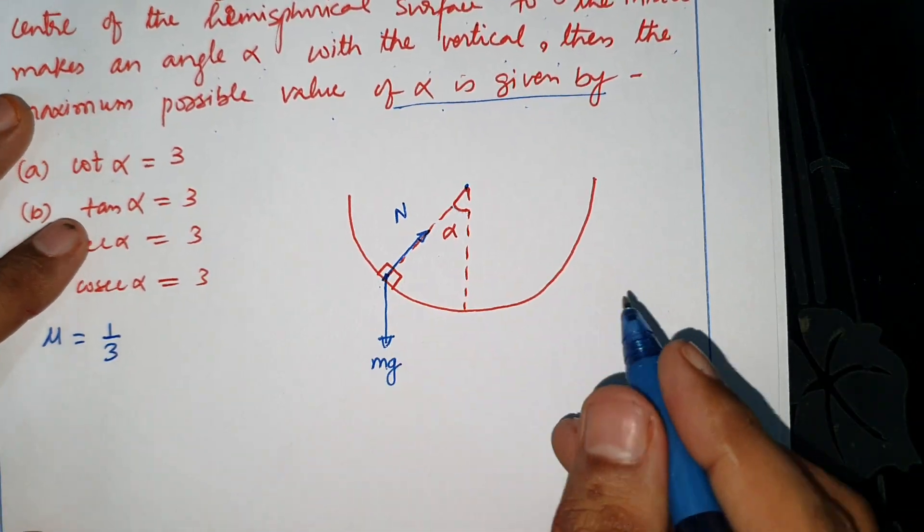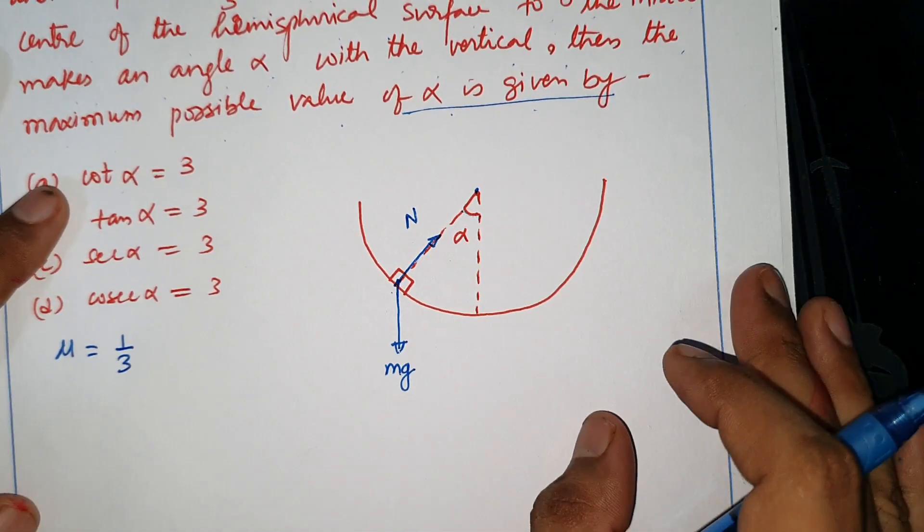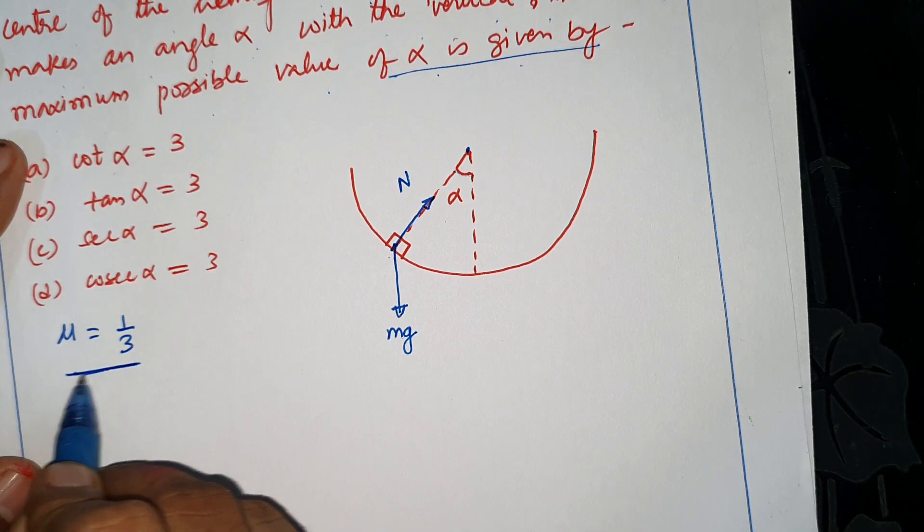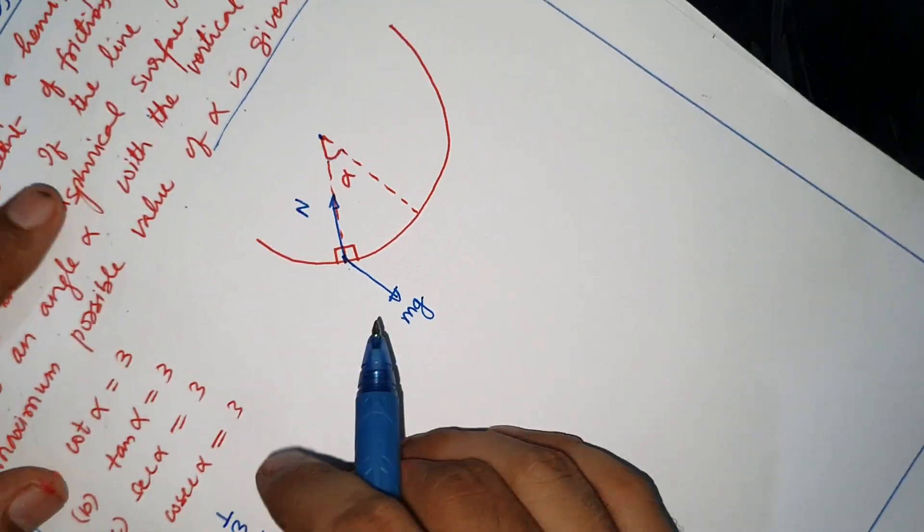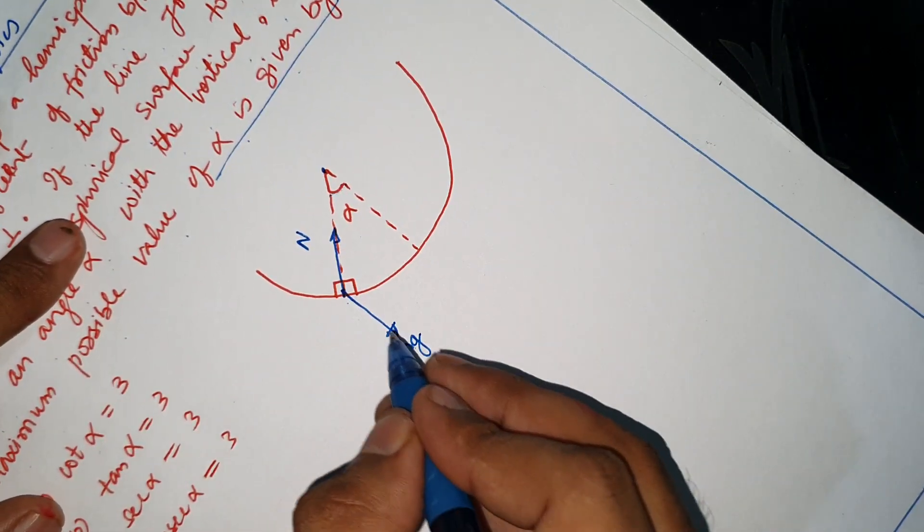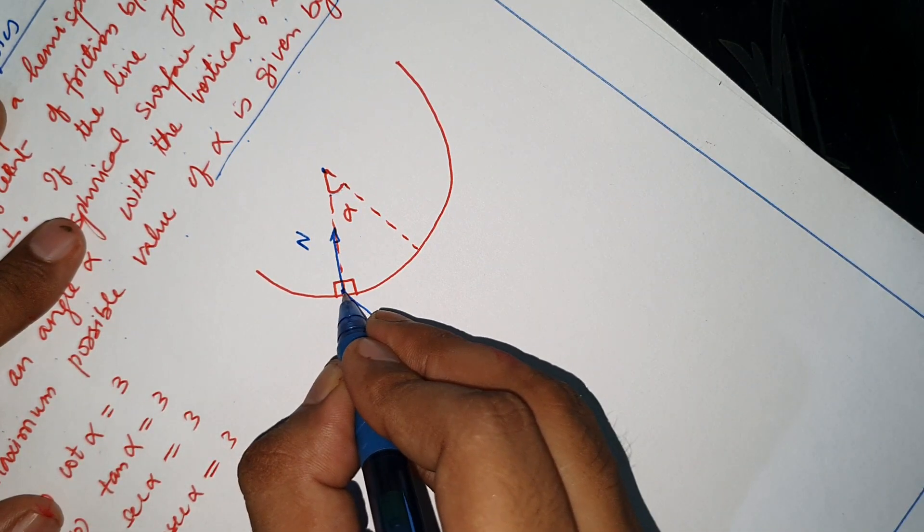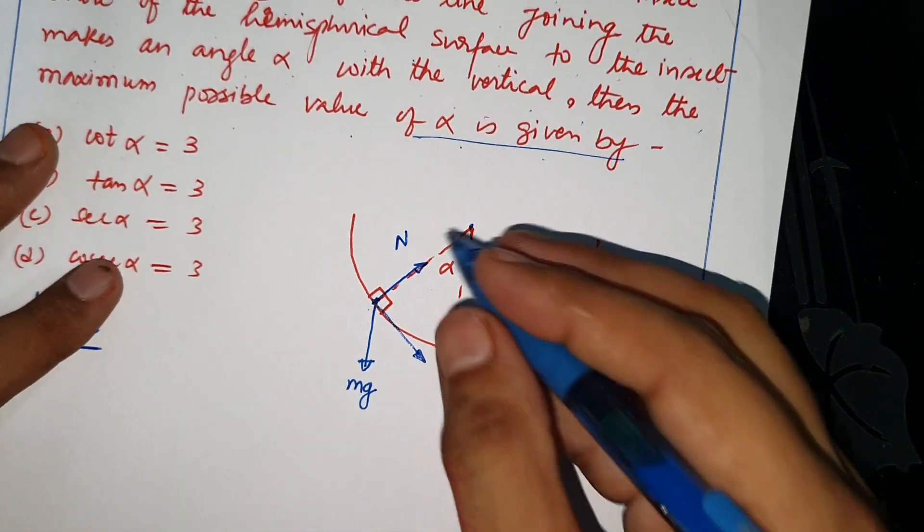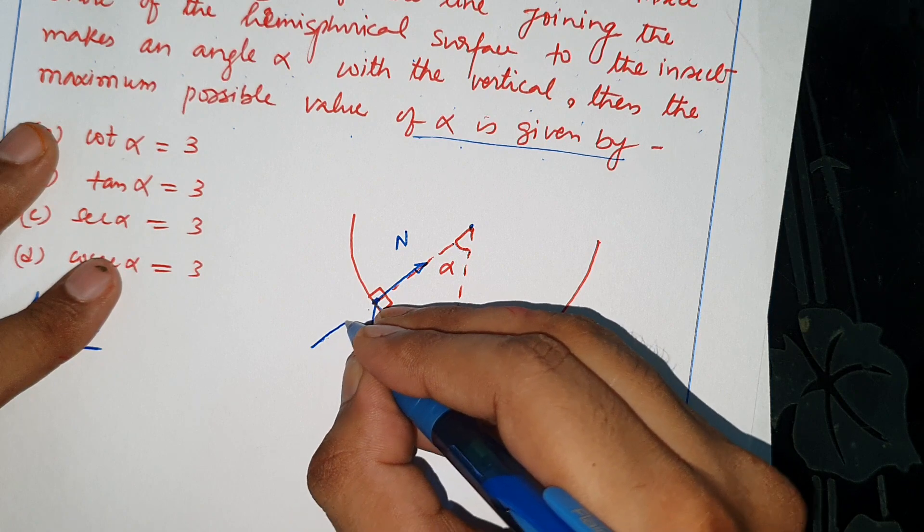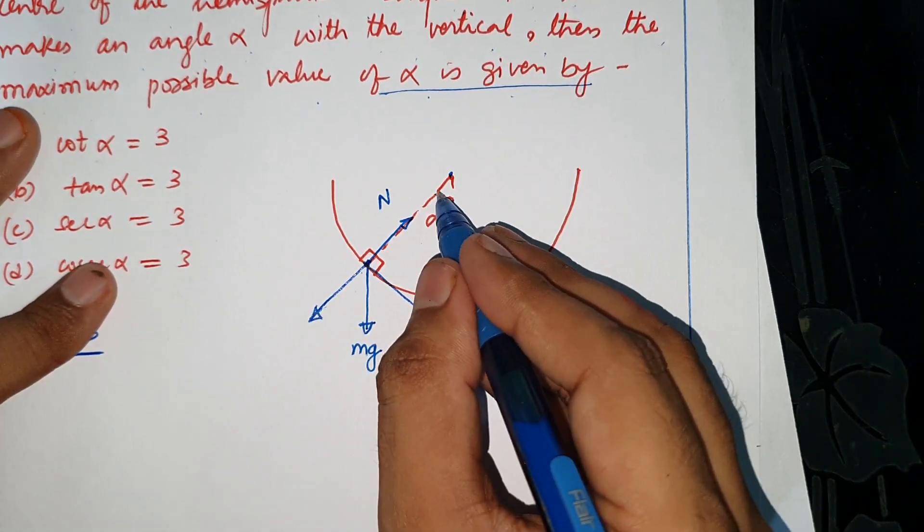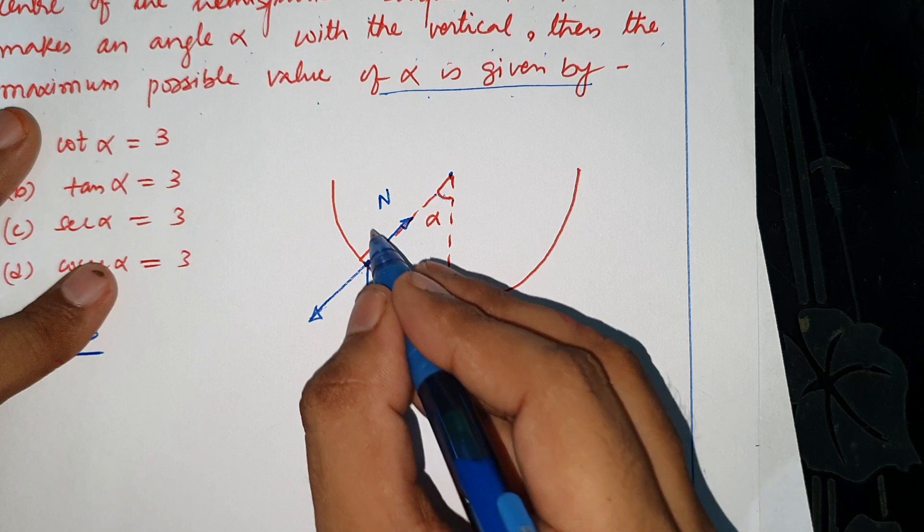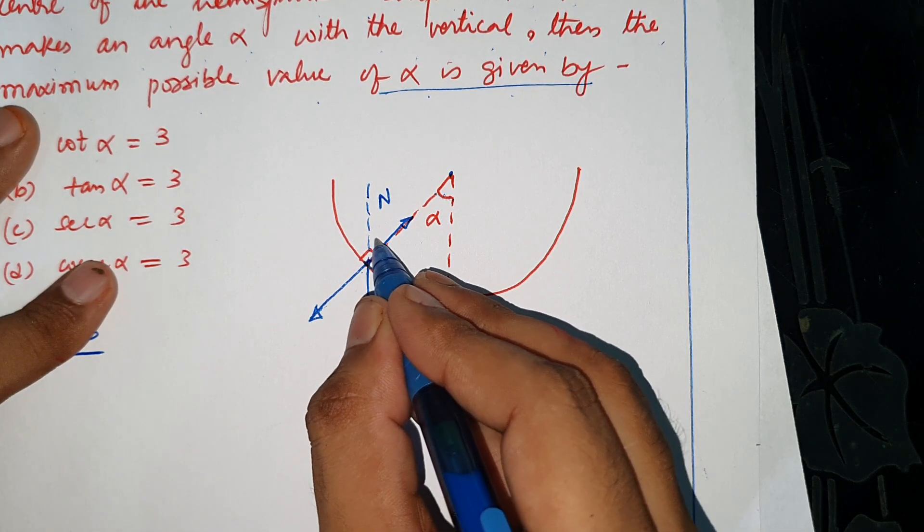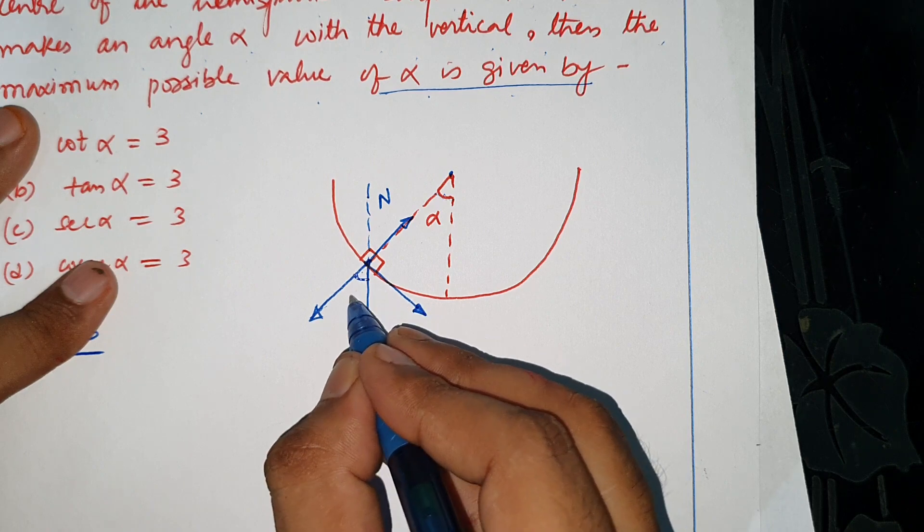This is the insect. Now, if we look at the forces, there is friction because we have friction at the surface. If we resolve mg, then one component will act tangentially and one component will act normally. If this is alpha then this will also be angle alpha.